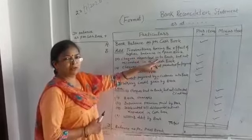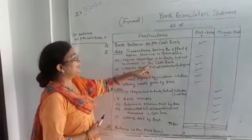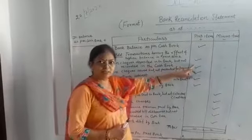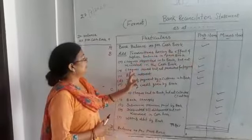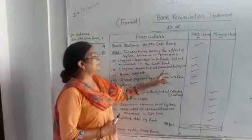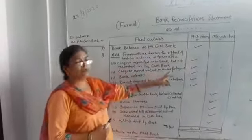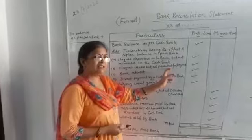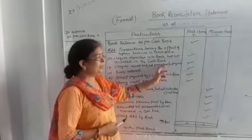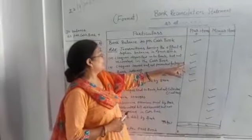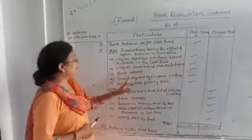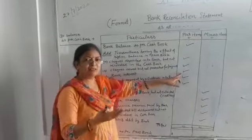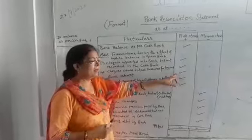The cheque was deposited to the bank — it got added there — but the recording was not done in the cash book. Second: cheque issued but not presented for payment. The cheque was issued and was already minus in the cash book, but the entry is not yet in the passbook, so it needs to be added. After that, bank interest — the bank gave us interest, so it is added in the passbook.